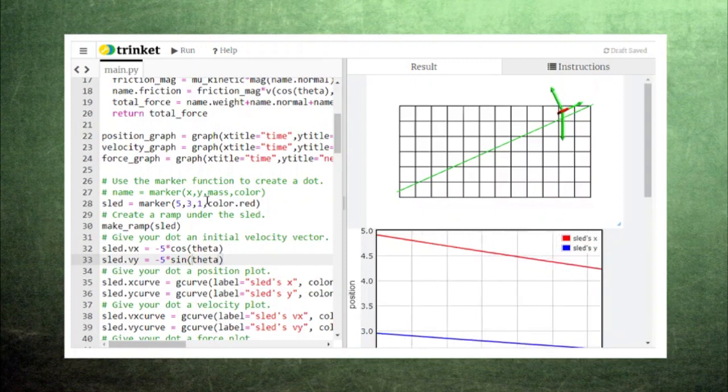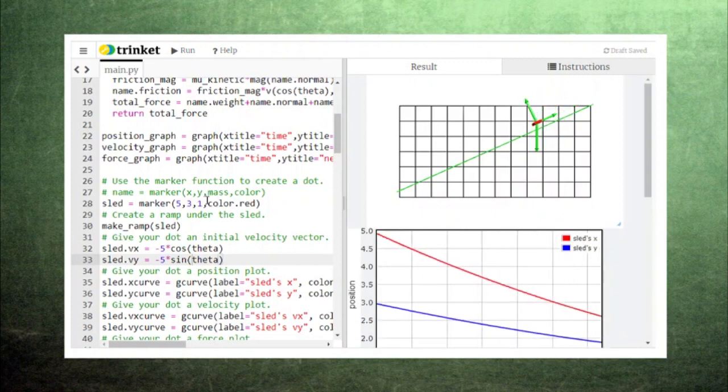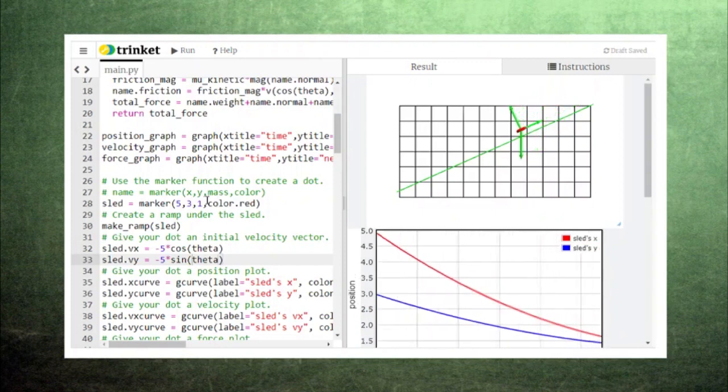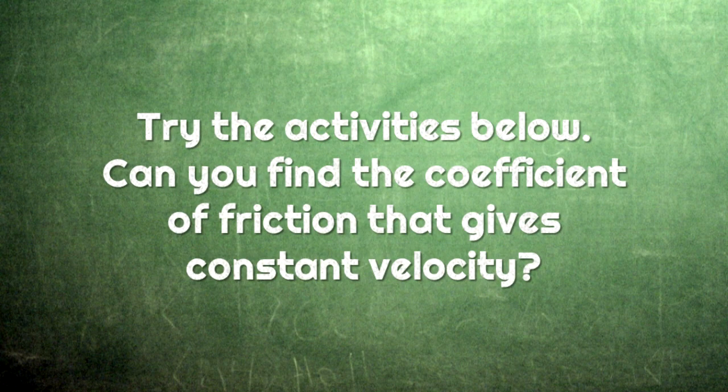This means that there's some special value of the coefficient of kinetic friction that will result in constant velocity motion. Click the link in the description below to find a set of activities that will help you adjust the coefficient of kinetic friction until you find this special value.